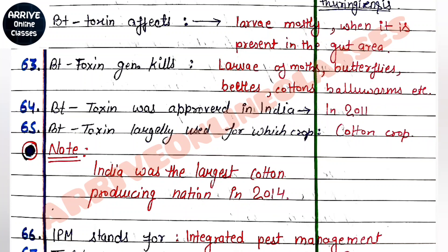BT cotton was introduced in India in 2002. BT toxin has been largely used for the cotton crop, which is why India became one of the largest cotton-producing nations.